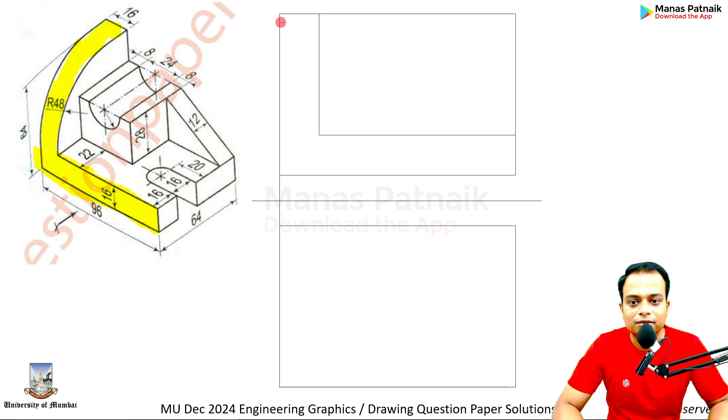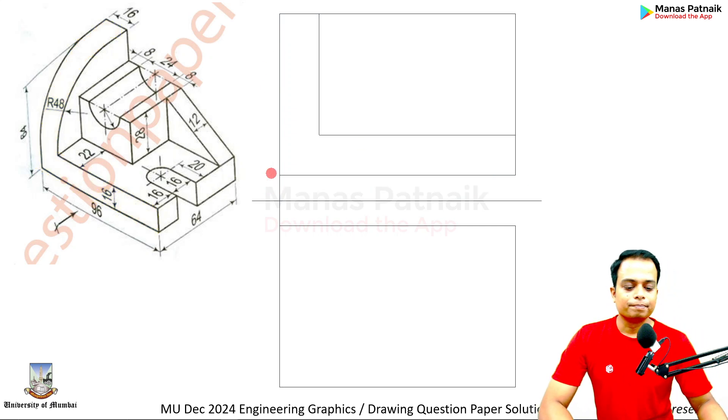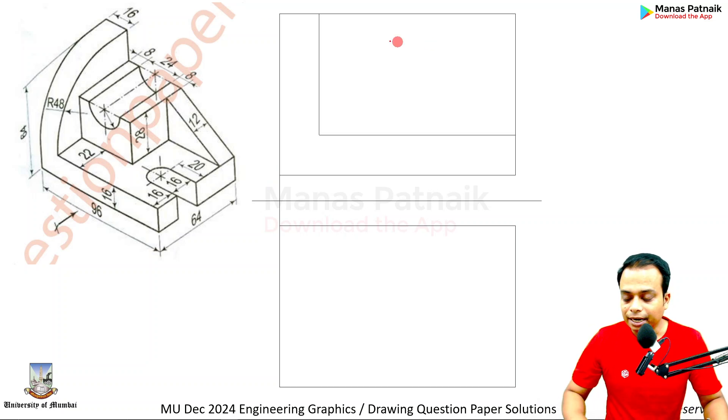So first of all, we are going to mark this sort of L-shape over here. This by the way is 16, that's 16, that's 96, that's 96. Done.